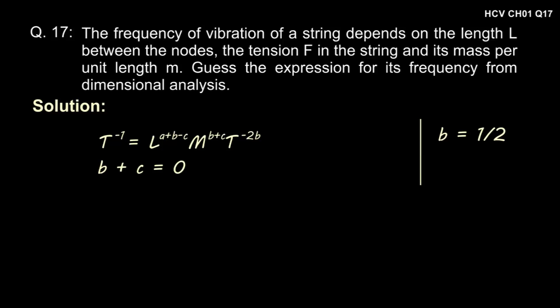Looking at the power of M we get B plus C must be equal to 0. Now we know that B is equal to 1 by 2, therefore C must be equal to minus B, that is minus 1 by 2.